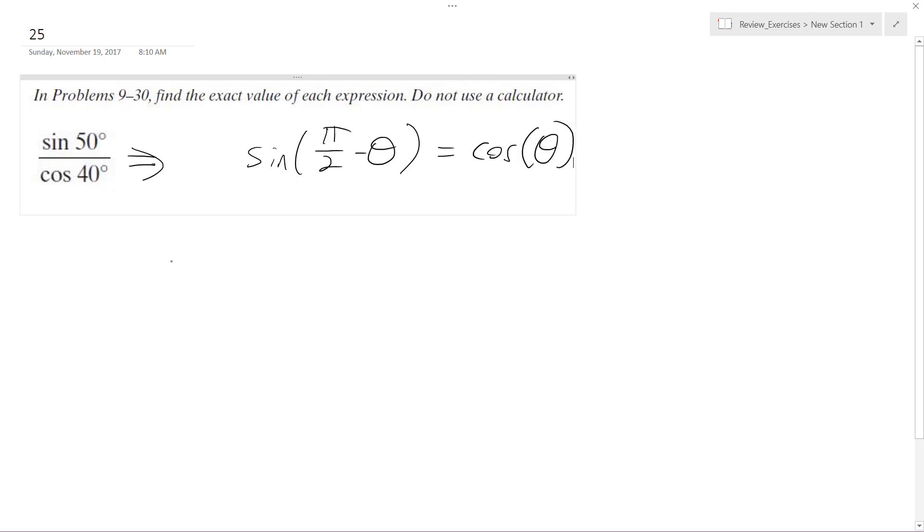Okay, that's right. Okay, so the sine of 50 degrees over the cosine's the same thing as the sine of, pi over 2 is 90 degrees minus 40 degrees. Hey, look at that. That works out pretty nice.